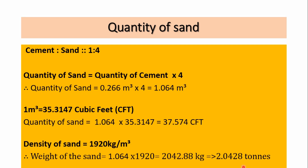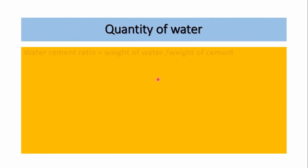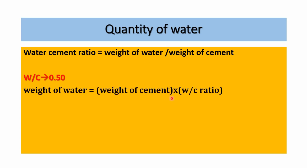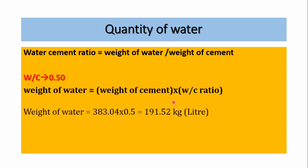Now let's see the quantity of water. Considering a water-cement ratio of 0.50, we know the water-cement ratio and the weight of cement. To get the weight of water, we multiply the weight of cement by the water-cement ratio: 383.04 multiplied by 0.5, which equals 191.52 kg.